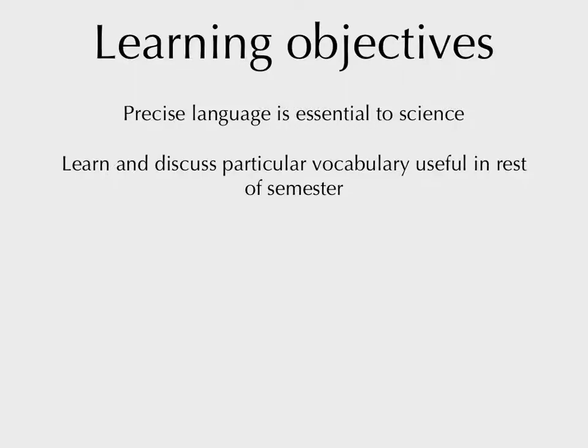So, learning objectives for today. Precise language is essential to science. You can't just say the thingy. We have vicious fights about what words mean in science. It's kind of sad, but it happens. And it's important, because if I'm saying speciation is X, and someone's saying no speciation is Y, we can't talk about things that affect speciation. If we don't have the same term in mind, we can have these fruitless fights. We just fight about mistaken words rather than something about biology. So, we're going to learn and discuss some particular vocabulary that's useful in the rest of the semester.